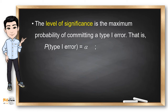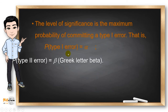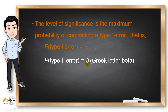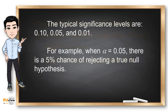The level of significance is the maximum probability of committing a type 1 or type 2 error. We use the Greek letter alpha to denote the probability of type 1 error, and beta to denote the probability of type 2 error. The typical significance levels are 0.1, 0.05, and 0.01. When the alpha level is 0.05, there is a 5% chance of rejecting a true null hypothesis.